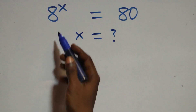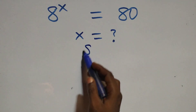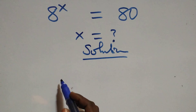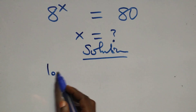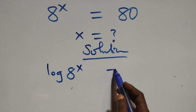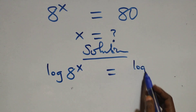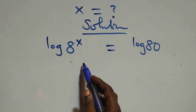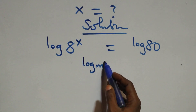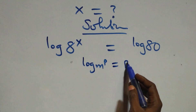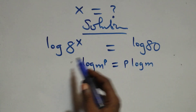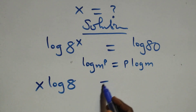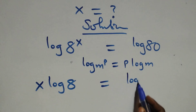Hello, you are welcome. How to solve this nice exponential equation. From here, we take the log on both sides: log(8^x) = log(80). This follows the power of log rule: log(m^p) = p·log(m), so we have x·log8 = log80.